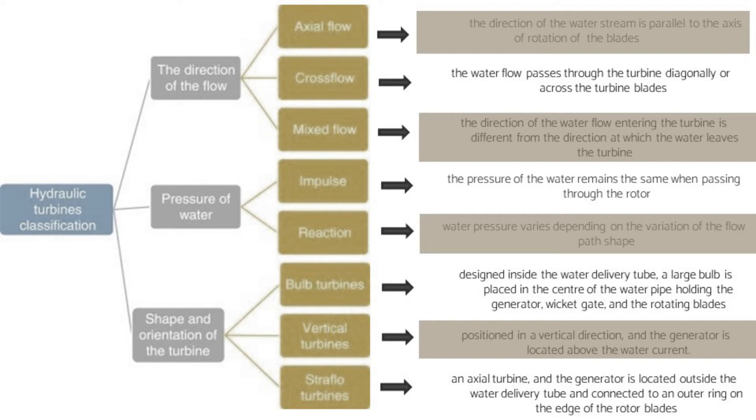For the pressure of water, we have impulse and reaction turbines. For impulse, the pressure of water remains the same when passing through the rotor. For reaction turbine, water pressure varies depending on the variation of the flow path shape.